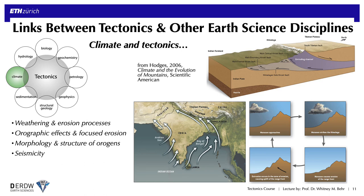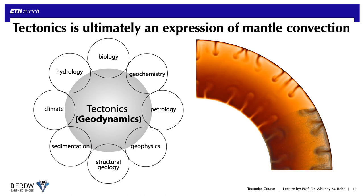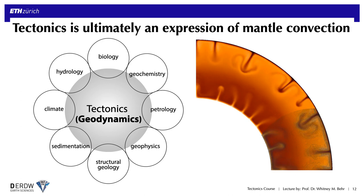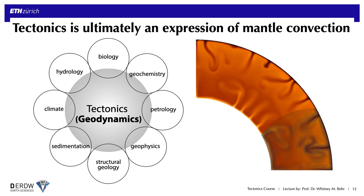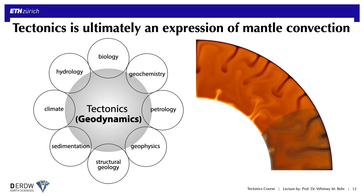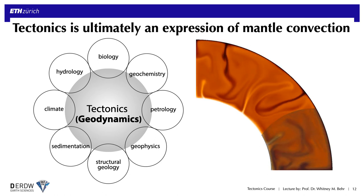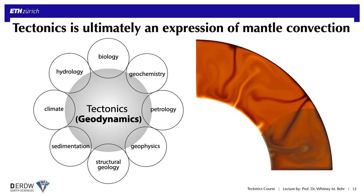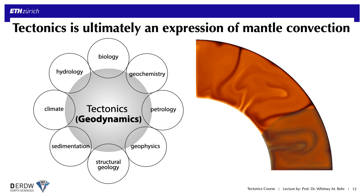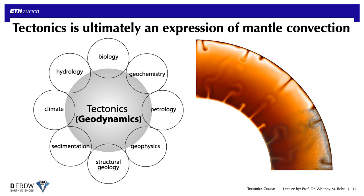We'll discuss more examples of these interplays later in the class. Ultimately, tectonics is tracking the process of mantle convection — what the plates are recording is the very outer surface of this special mode of planetary cooling known as plate tectonics. The study of plate tectonics therefore provides essential information about the physics of this process and offers clues as to why Earth shows this unique form of planetary cooling. This highlights the overlap with geodynamics and the physics of our planet, and throughout the course we should be thinking of plate tectonics as a whole-mantle system, not just a lithospheric one.